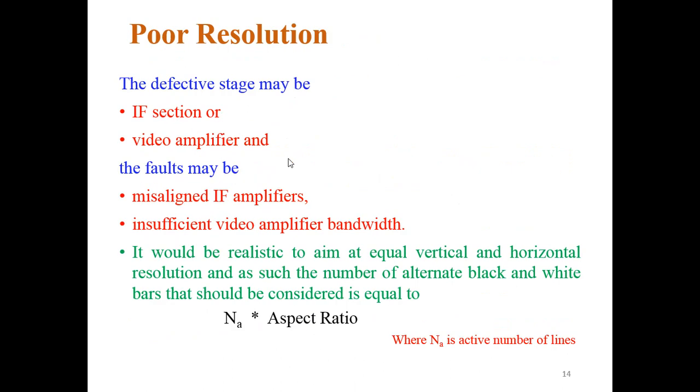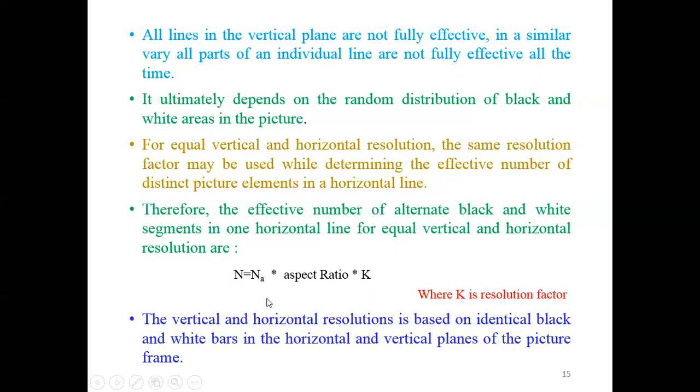As NA times aspect ratio we have taken here as well, and the K is the resolution factor. The vertical and horizontal resolution is based on the identical black and white bars in the horizontal and vertical planes of the picture frame. These are some of the problems which we have identified and from where these problems are coming.